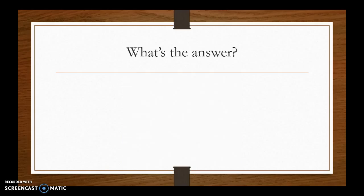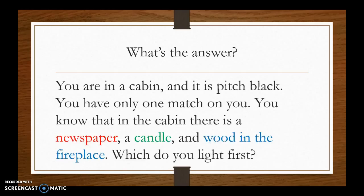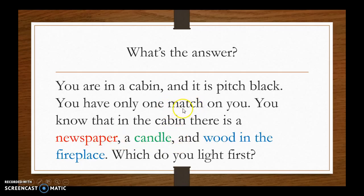A simple, easy way of looking at critical thinking is through brain teasers. Here's one: you are in a cabin and it is pitch black. You only have one match on you. In the cabin there is a newspaper, a candle, and wood in the fireplace. Which do you light first? If you think about it critically, the answer is the match — you have to light the match first before you can light anything else. Trick question!